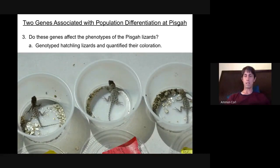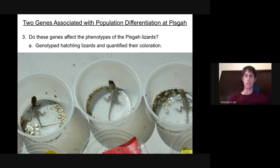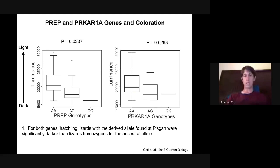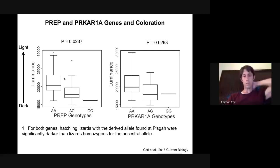To test whether these population-level differences were associated with phenotype, I turned to the hatchlings from my crosses raised in a common environment. I genotyped the hatchlings and quantified their coloration. For both PREP and PRKAR1A, the alternate alleles are restricted to the Pisgah population, and the wild-type is AA for both genes. There was a significant difference explained by genotype: alleles found in the Pisgah population led to darker hatchlings, suggesting a link between genotype and phenotype for both genes.